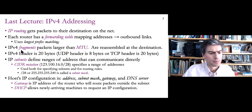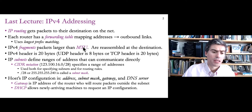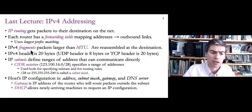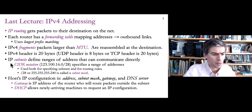IP version 4 has a fragmentation feature — basically, if every link has an MTU, maximum transmission unit, which is the maximum packet size for that link, and someone sends a packet that's bigger than a particular link can handle, IP version 4 allows that packet to be broken into pieces and reassembled at the destination. Like TCP, IP version 4 has a header that comes before the TCP header; it's 20 bytes long.